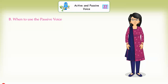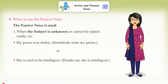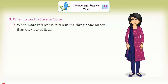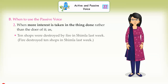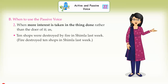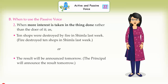When to use the passive voice? The passive voice is used when the subject is unknown or cannot be stated easily, as in 'My purse was stolen' (somebody stole my purse), or 'She is said to be intelligent' (people say she is intelligent). Also when more interest is taken in the thing done rather than the doer of it, as in '10 shops were destroyed by fire in Shimla last week' or 'The result will be announced tomorrow.'